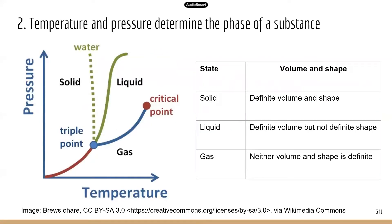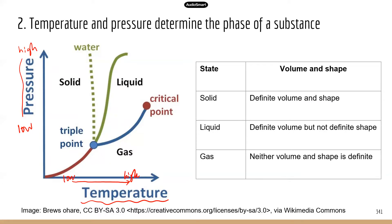Here is an image of temperature and pressure in relation to the phase of a substance. You can see temperature on the x-axis and pressure on the y-axis — from low to high temperature, and from low to high pressure. There are lines — a red line, green line, and blue line — that define the regions where, under given environmental conditions, the substance will be in a particular phase.